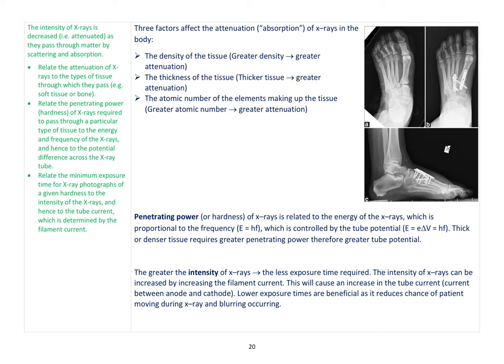When you want to take an X-ray, the first thing we need to know about is the penetrating power, or hardness, of X-rays. That's related to the energy of the X-rays. The energy is proportional to the frequency because E = hf, and that is controlled by the tube potential - whatever voltage we have on the high voltage supply determines the maximum frequency through the derivation in the previous slide. If we have thick or dense tissue, that requires greater penetrating power, therefore greater tube potential. We'd need to use a higher voltage on the high voltage supply to increase the penetrating power if we were X-raying our thigh as opposed to our wrist.